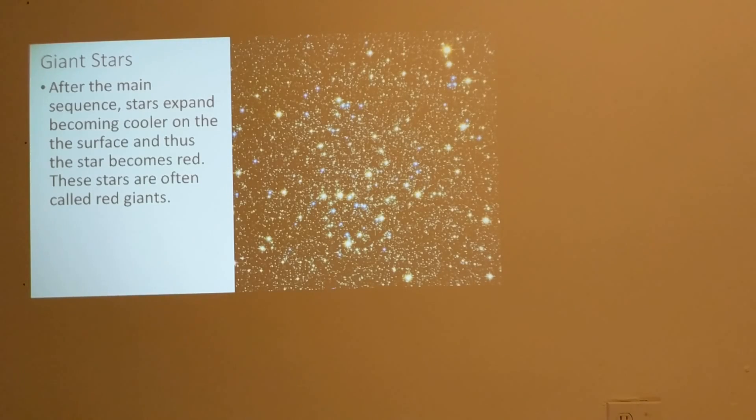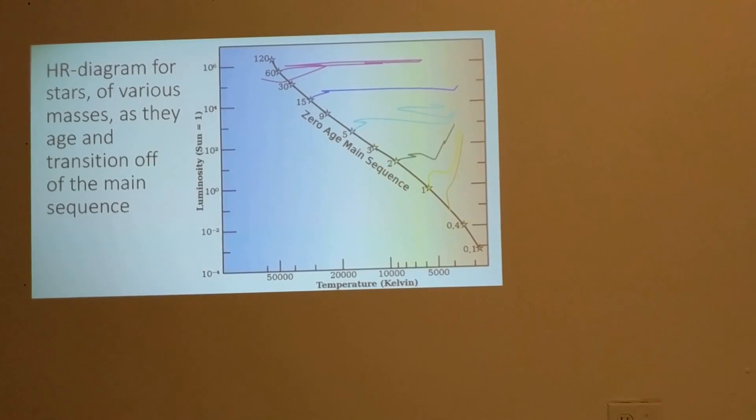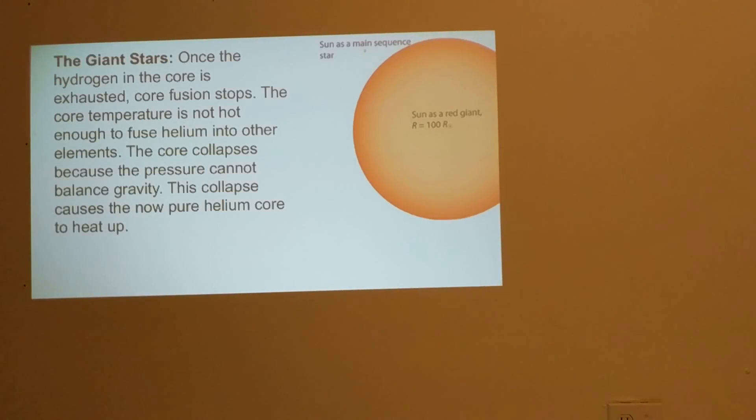On the HR diagram, main sequence stars of various masses age and transition off the main sequence. This happens as they run out of their supply of hydrogen in the core. Once the hydrogen in the core is exhausted, core fusion stops. The core temperature is not hot enough to fuse helium into other elements. The core collapses because the pressure cannot balance gravity. This collapse causes that now pure helium core to heat up.